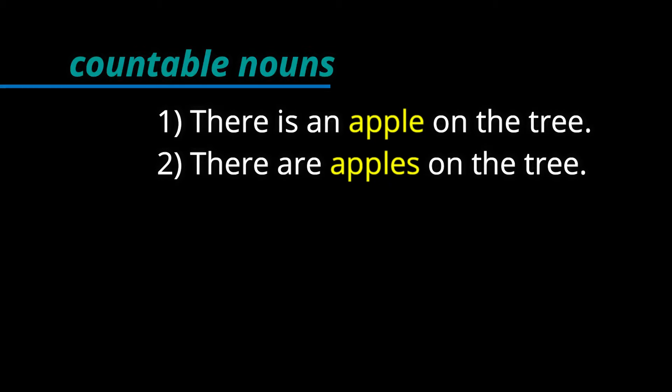Let's look at the examples. In the first set of examples we have the countable noun apple. Apple is a countable noun — we can count apples. So in the first sentence: there is an apple on the tree. This is another way to say there is one apple on the tree. In the second example, there are apples on the tree. We can count them so we can add an S and say there are apples on the tree — there are more than one apple on the tree. Countable nouns we can make them plural; in this case I just added S to apple to make it plural.